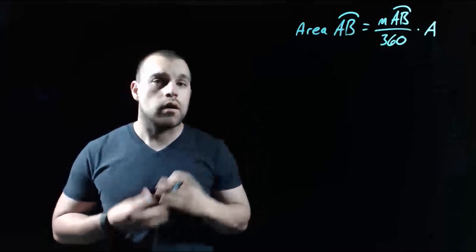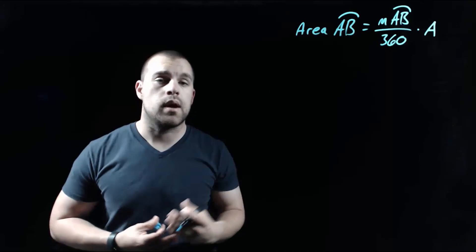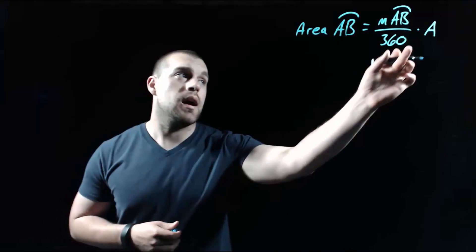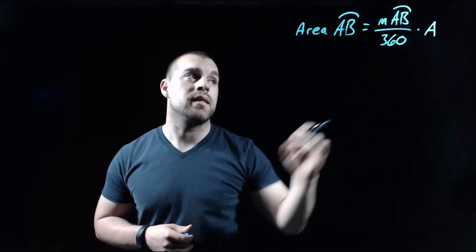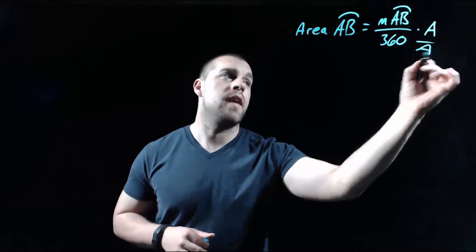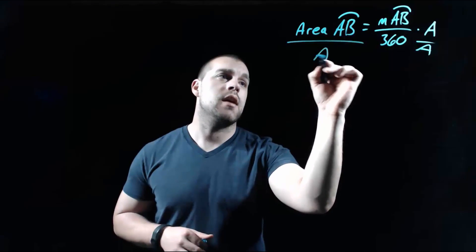We can also take our sector area formula and rearrange it a little bit in case we were trying to solve for something else. So let's say on the back end right now we're multiplying by the area of our full circle. I want to move that over to the other side by dividing both sides by the area of our entire circle,